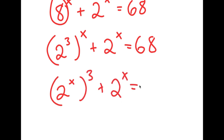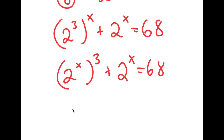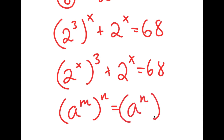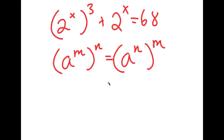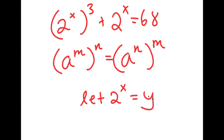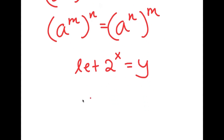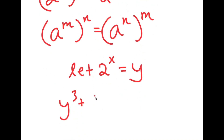So I have (2^x)^3 plus 2^x is equal to 68. From here, I'm going to let 2 to the power of x equal the variable y. So if I substitute y in for 2 to the power of x, I get y to the power of 3 plus y is equal to 68.